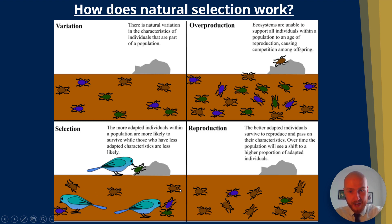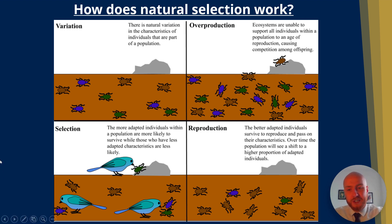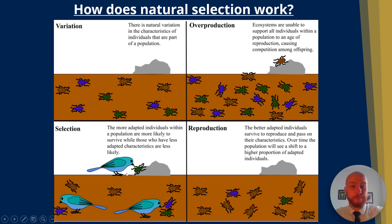We can see the brown beetles are not being seen by the birds, which rely on very good colour vision to determine prey. So the brown beetles are more likely to survive, whereas the beetles that don't blend in with the environment — the green and purple ones — are getting eaten by the birds.